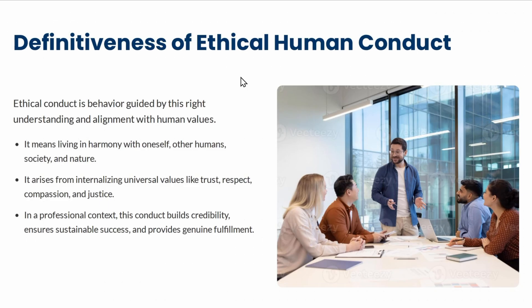Definitiveness of ethical human conduct means living with honesty, fairness, harmony, and justice — not exploiting or taking advantage of others. An ethical person acts with integrity and justice, respects others, and most importantly respects nature by not wasting resources. An ethical person works for mutual prosperity.